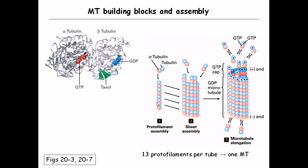Once the protofilaments are made, many protofilaments come together to form a sheet-like assembly, which then rolls into a cylinder-like shape. Once construction nears completion, a GTP cap needs to be added. In this case, both alpha and beta tubulins are bound with GTP — instead of the usual GTP/GDP arrangement — and they bind at the end to produce the GTP cap.